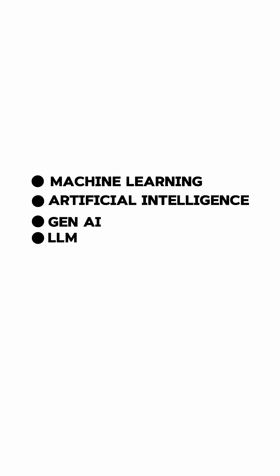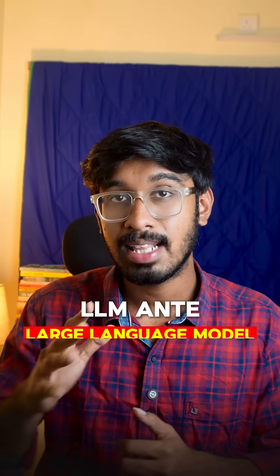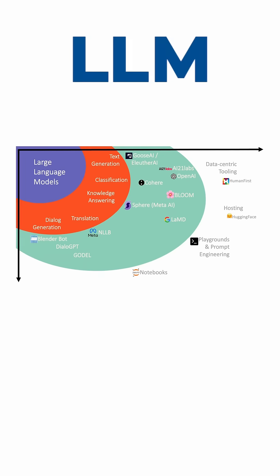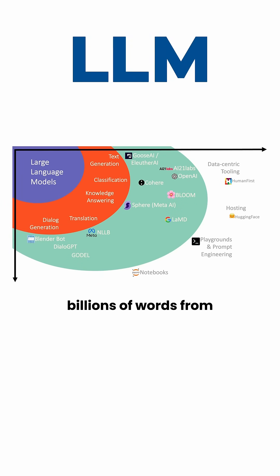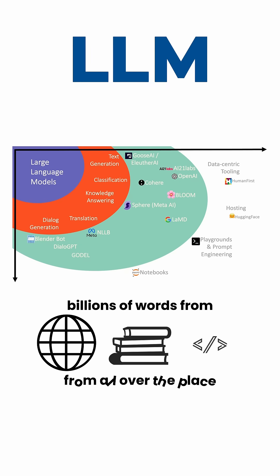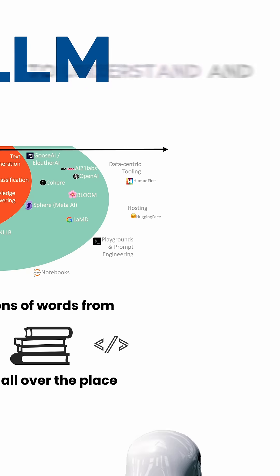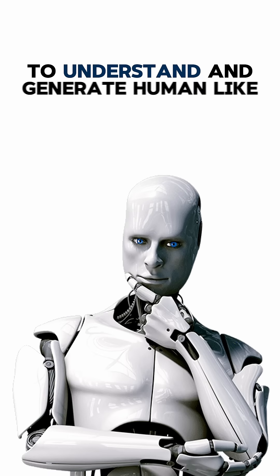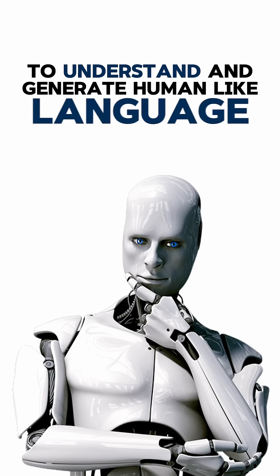LLM — what is it? LLM is a large language model. It is basically an AI trained on billions of words from the internet, books, coding, from all over the place, to understand and generate human-like language.